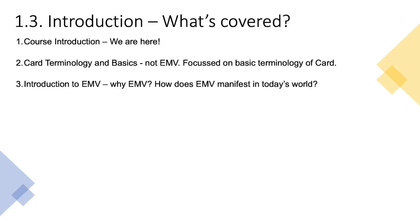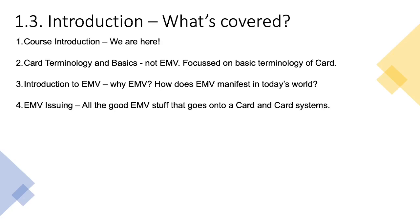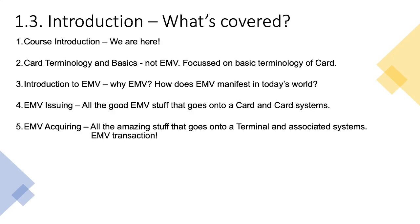Then we move on to introduction to EMV: why do we have EMV, why was it introduced, who introduced it, and what does EMV look like in today's world? We then jump into the slightly more in-depth and complex components of EMV. We look at EMV issuing, which will touch on all of the EMV tags, parameters, and counters that are personalized onto a card and that need to reside on the various card systems. Once done with EMV issuing, we move into EMV acquiring — this covers all the EMV elements that go onto a terminal and the associated systems that allow the terminal to function. In this section we will also take a very close look at an EMV transaction.